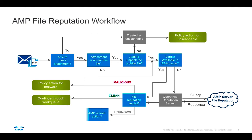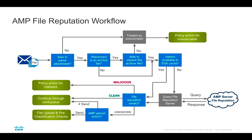Once we have a verdict, malicious files are processed according to the configured policy. It's important to keep in mind that if we're evaluating contents of an archive file with multiple files inside, it's enough for even one of them to be malicious to consider the entire archive and the message malicious. Clean files continue through the ESA work queue to content filtering and outbreak filtering. Finally, attachments with unknown disposition may be requested by the AMP cloud for upload to ThreatGrid — the AMP cloud can assign an upload action saying yes, upload this file, or no, don't upload.